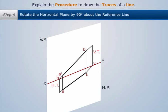Thus, we get the traces of line AB. We see that the vertical trace of line AB lies above the reference line XY, and its horizontal trace lies below the reference line XY.